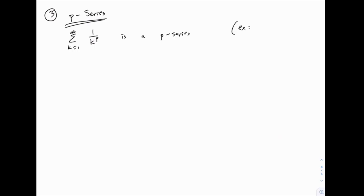We have, for example, seen 1 over k and 1 over k squared. Both of those are examples of p-series. In the first case, p equals 1. In the second case, p equals 2. And we know that the first one diverges and the second one converges. We just tested that with the integral test.